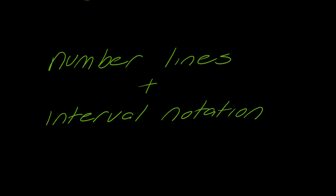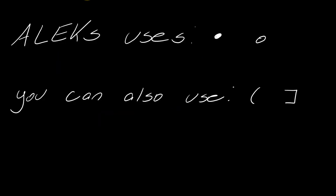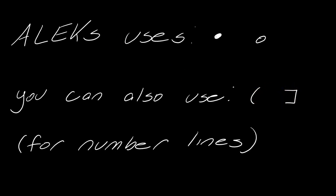With that in mind, let's talk about number lines and interval notation, because depending on what system you're working with, this is a really common thing that comes up with linear inequalities. There are inconsistencies with notation — ALEKS uses closed and open dots, but other systems or instructors might use rounded brackets or closed brackets. I'll show you both sets of notation; they are interchangeable.